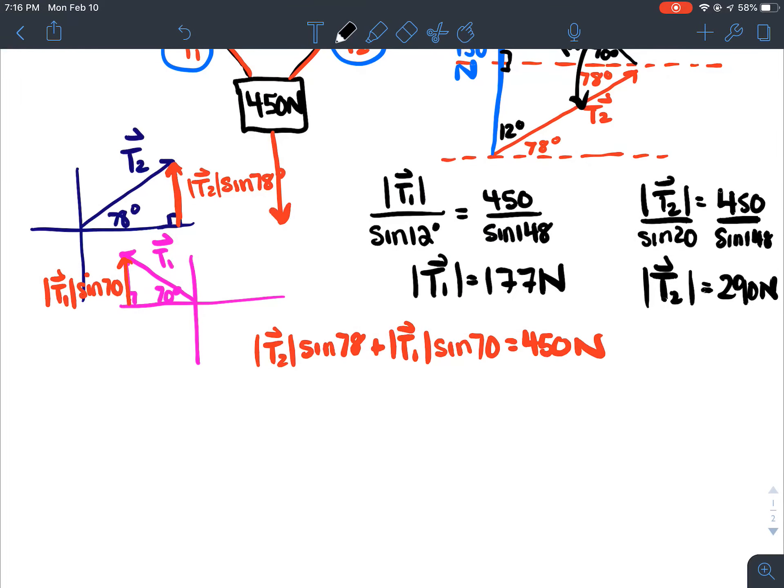You could say, I know this x component would be magnitude of T2 times cos 78. And this bottom one would be magnitude of T1 times cos 70. So, I know that my horizontal, since it's pulling this way and this one's pulling this way, I know that my horizontal ones would have to add up to nothing or they would have to equal zero. So, I would say like T1 cos 70 would have to be equal to T2 cos 78. And then what I could do is I could isolate a variable and sub it in.